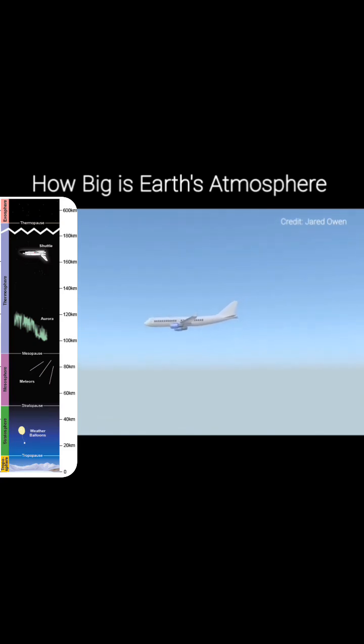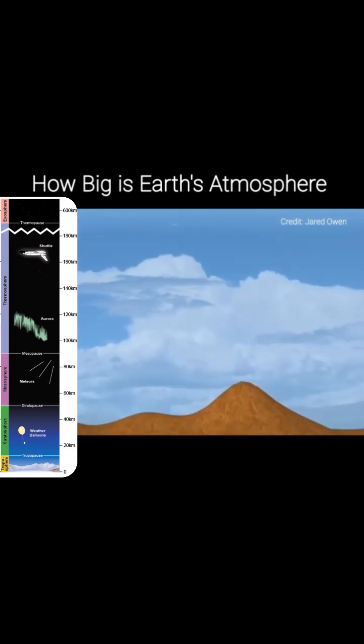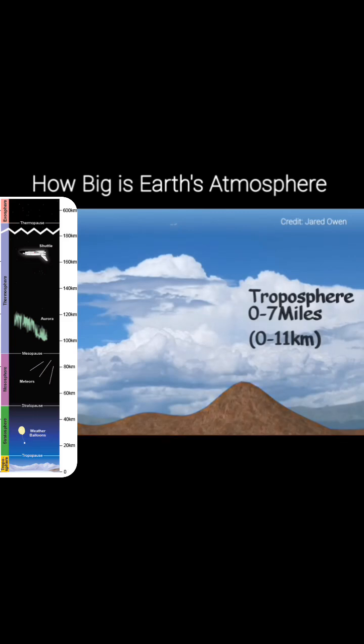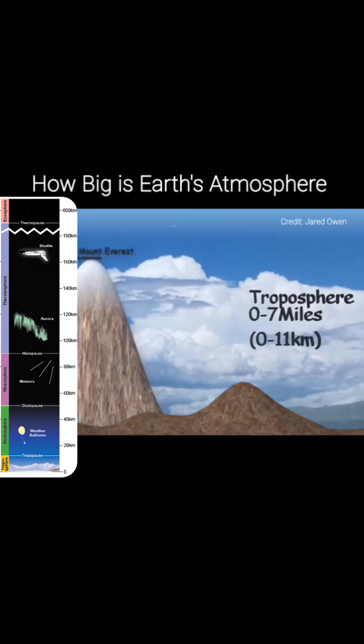The average cruising altitude of a commercial airline is between 30,000 and 40,000 feet in the air. That's at the very top of the first layer, the troposphere. This goes from the surface to about 7 miles high. Most of the clouds and weather happen in this layer. Mount Everest comes to about 5.5 miles high.